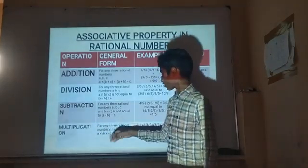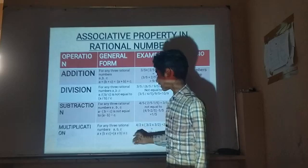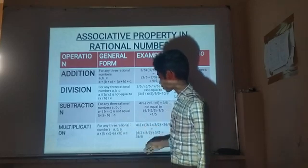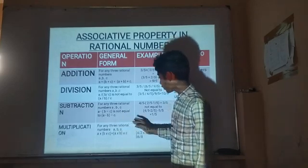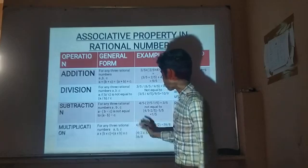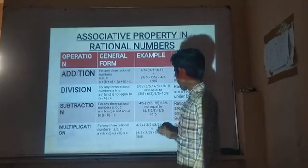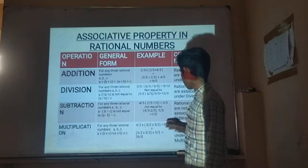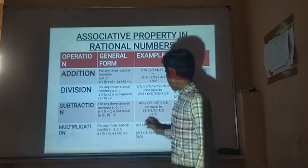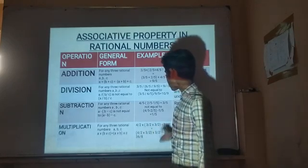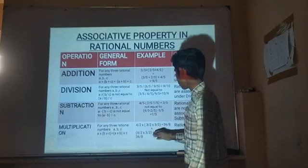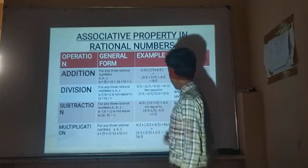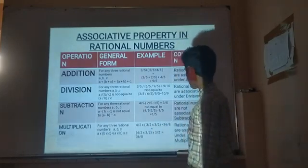Associative Property — Multiplication: for any three ratio numbers A, B, C, A into (B into C) is equal to (A into B) into C. For example, 4 by 2 into (3 by 2 into 3 by 2) equals 36 by 8, and (4 by 2 into 3 by 2) into 3 by 2 also equals 36 by 8. So ratio numbers are associative under multiplication.